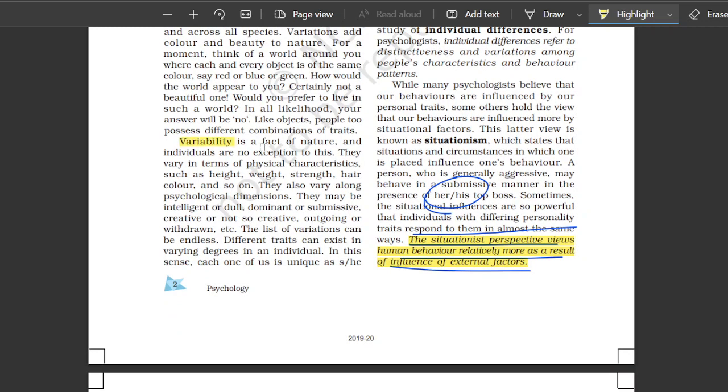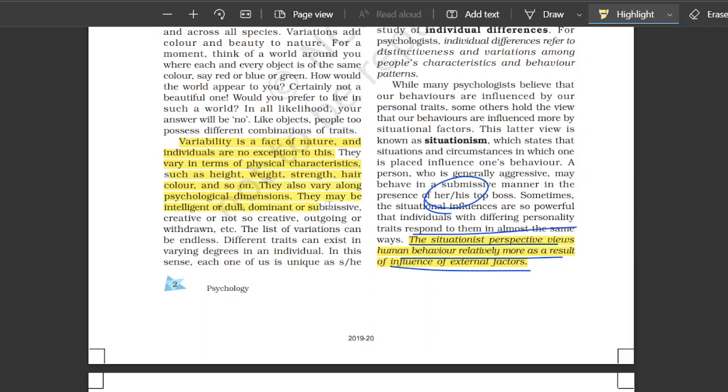So variability - the definition of variability is the fact of nature and individuals are no exception to this. They vary in terms of physical characteristics such as height, weight, strength, hair color and so on. They vary along psychological dimensions - intelligent, dull, dominant, submissive,